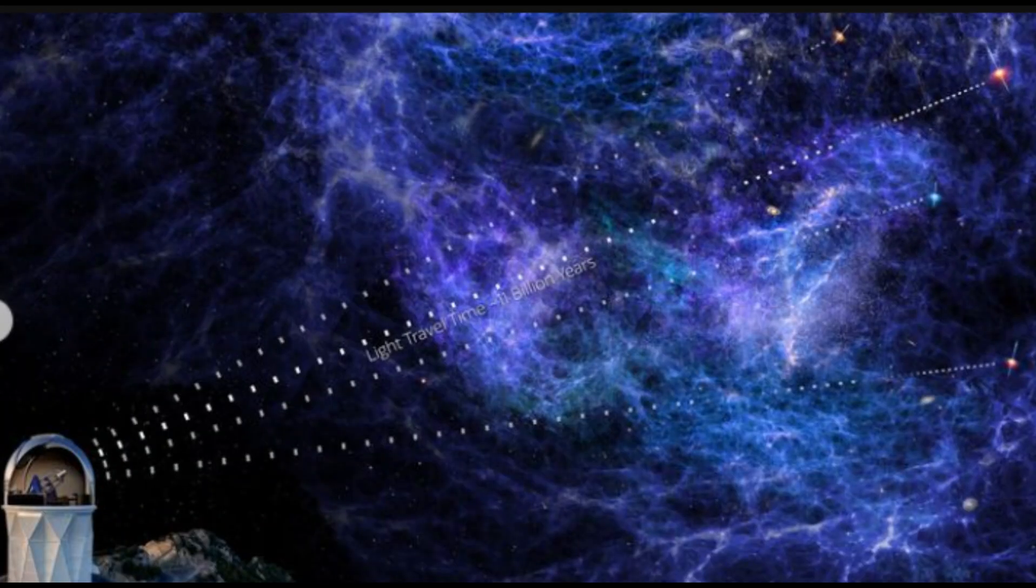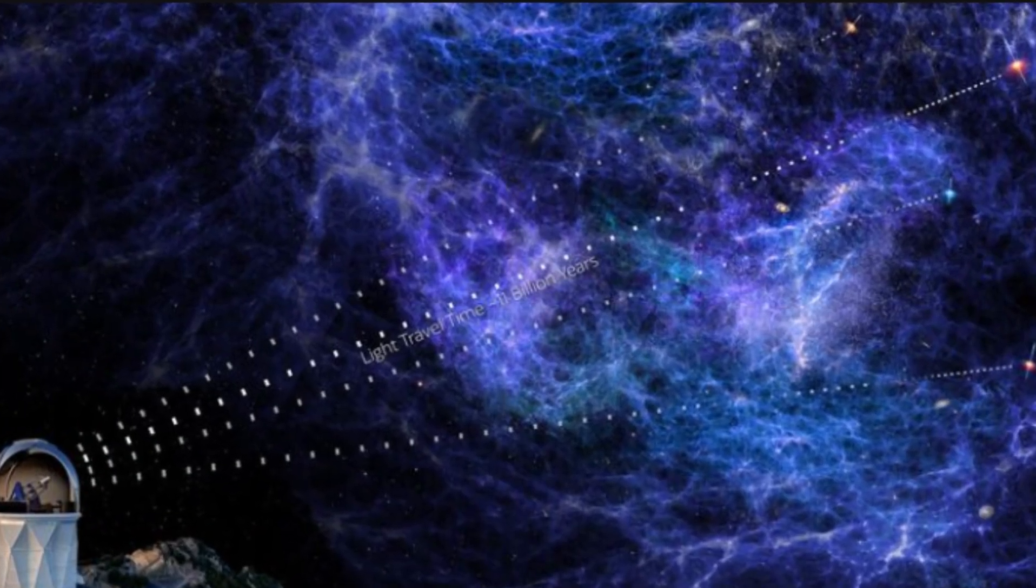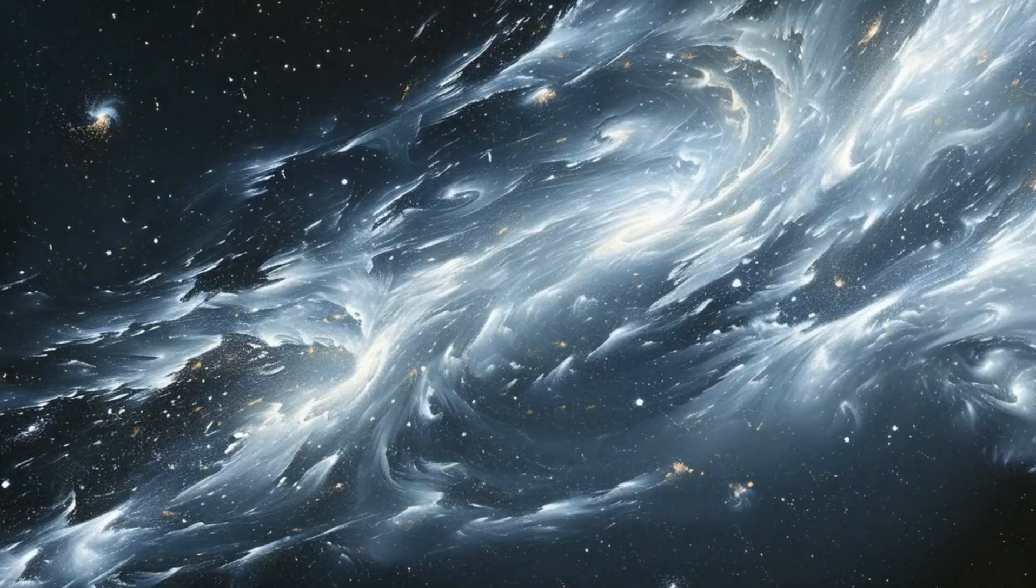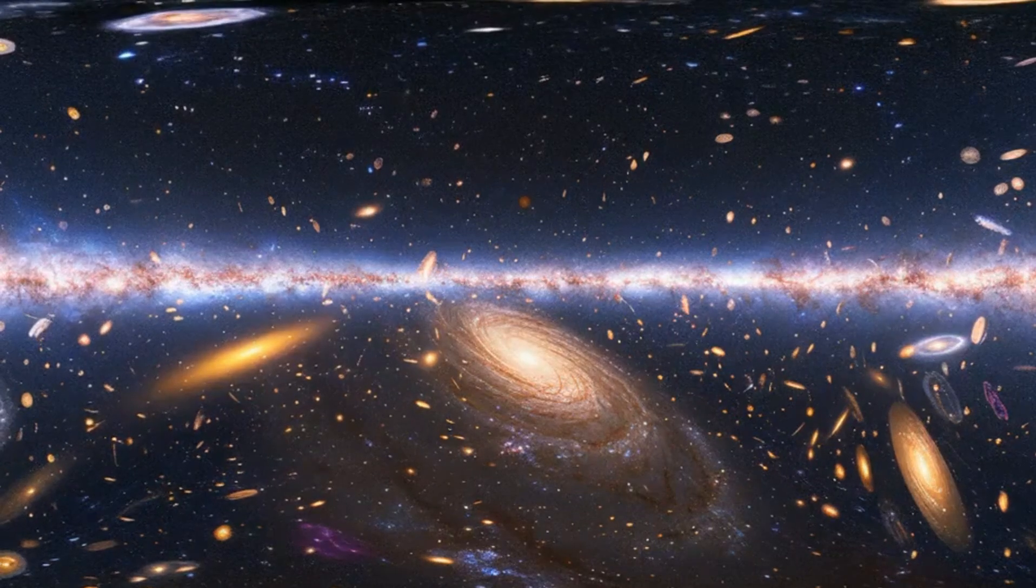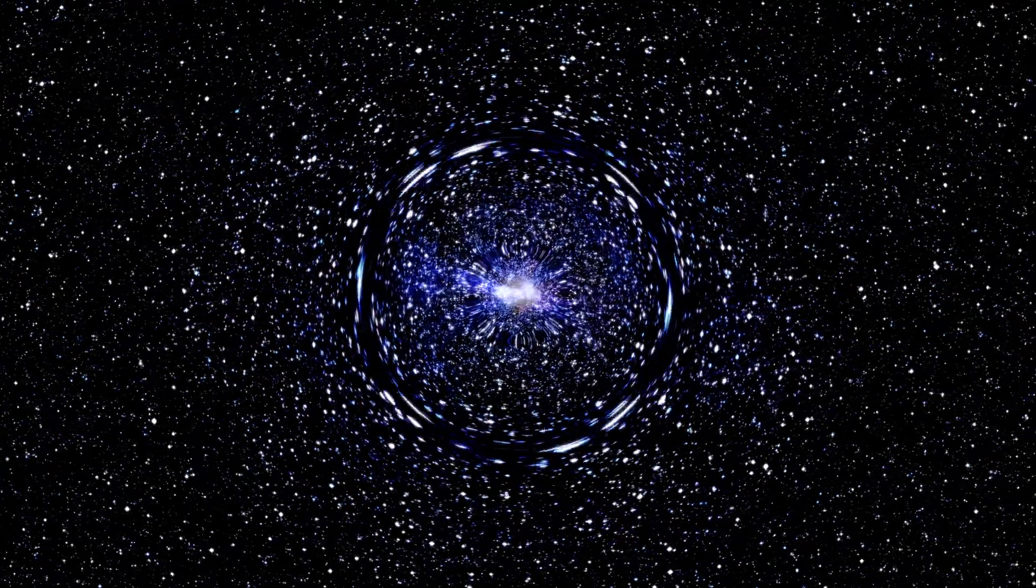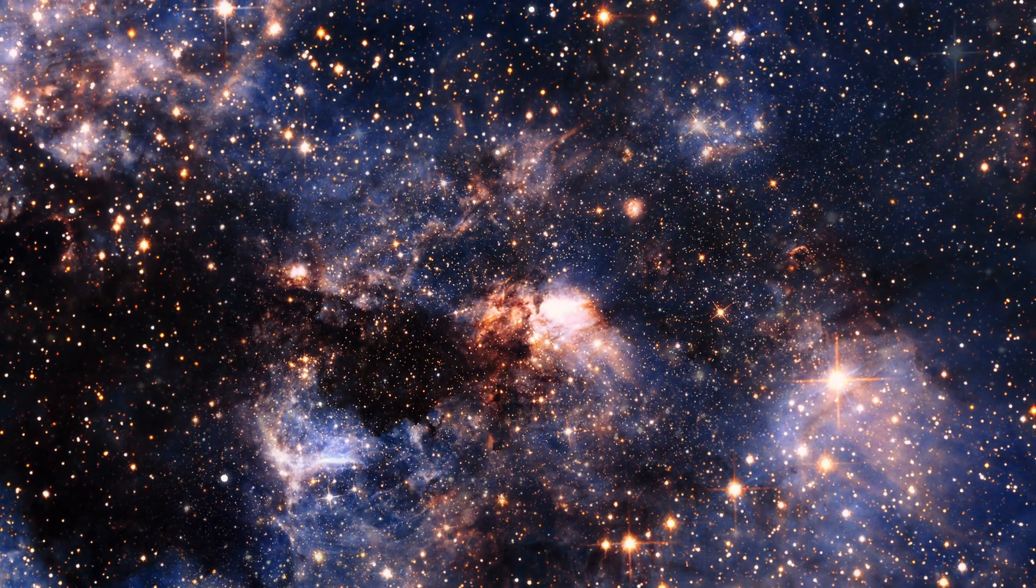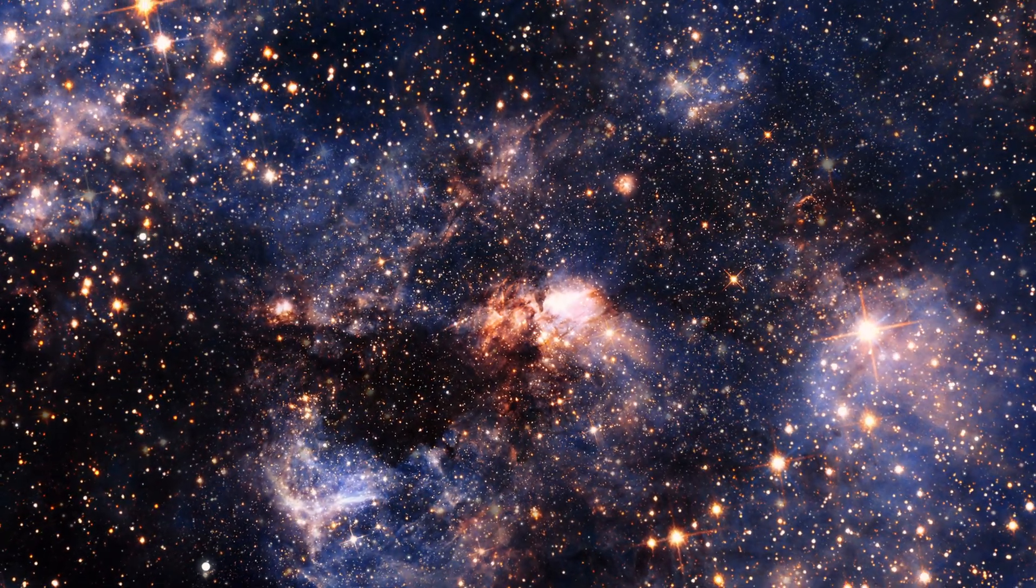The map also highlights a faint pattern known as baryon acoustic oscillations, which are subtle 3D wrinkles that formed in the early universe. These wrinkles provide a cosmic ruler that helps astronomers estimate distances to galaxies and infer the universe's expansion rate at various points in time.